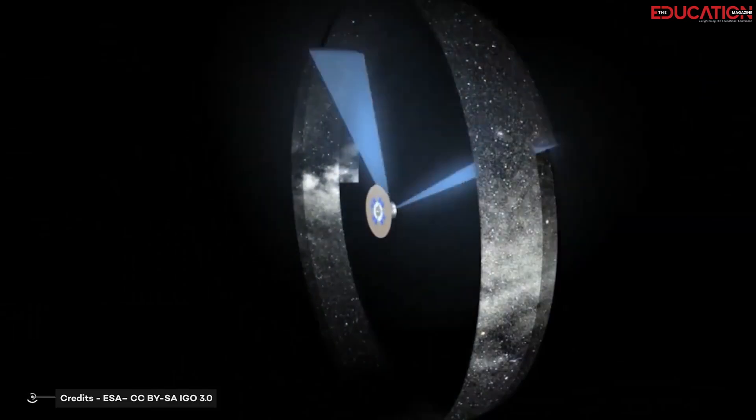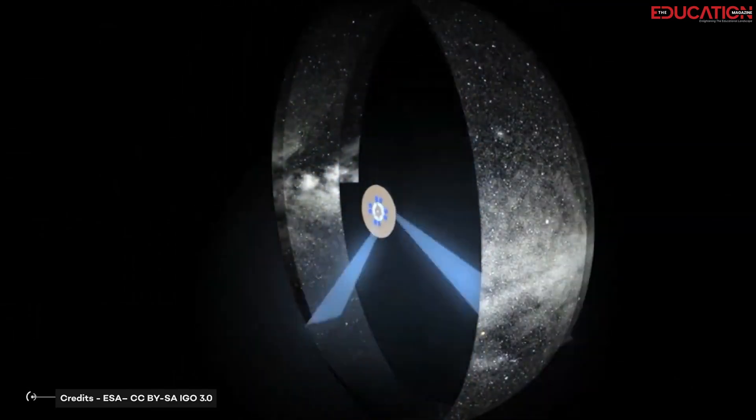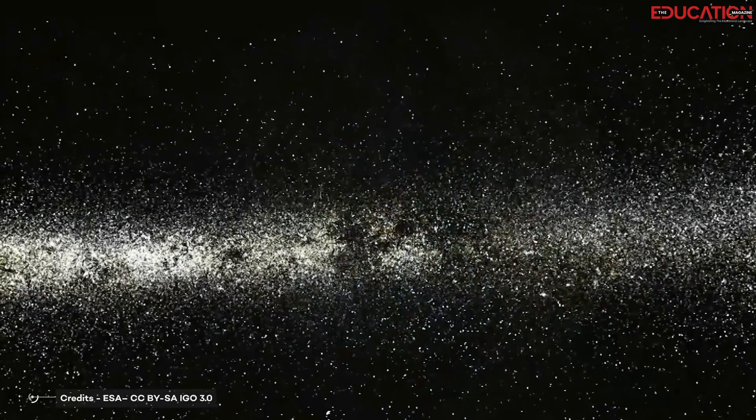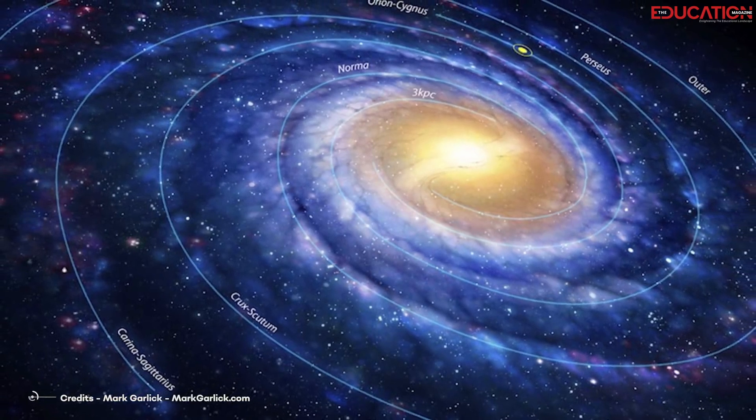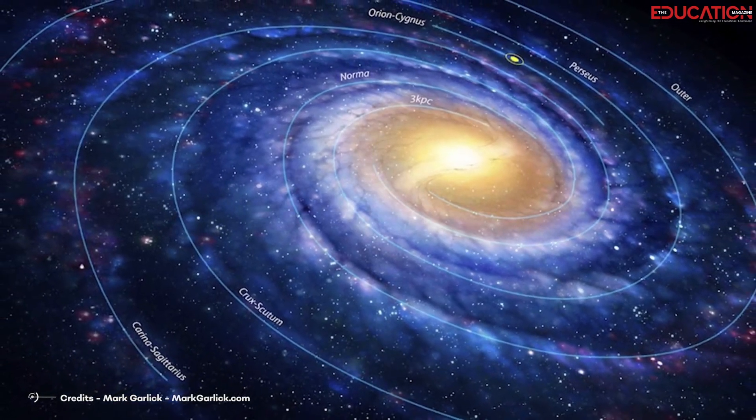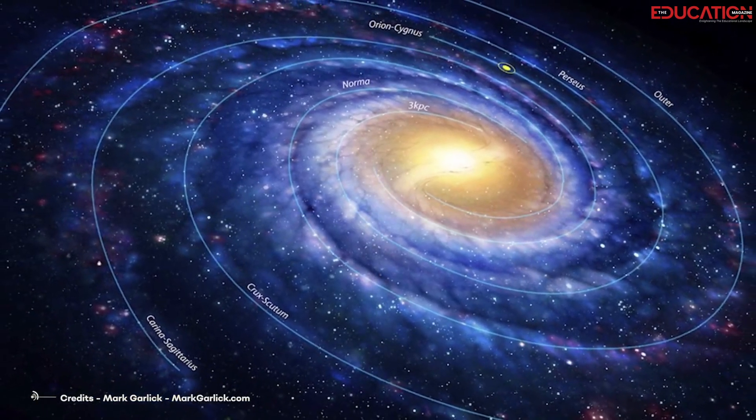Gaia has been able to measure billions of stars' positions, distances, and motions in the Milky Way. This information has allowed astronomers to create a detailed galaxy map and determine our location with unprecedented precision.